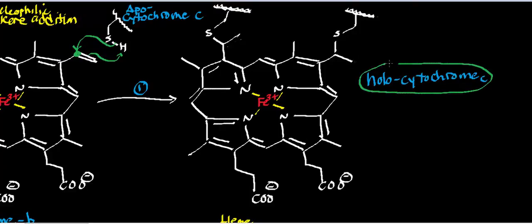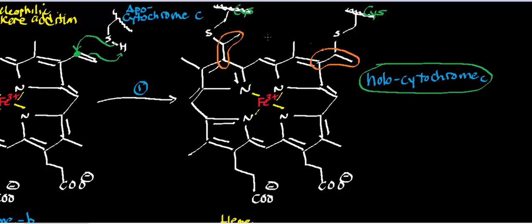The product of this mechanistic step is what's referred to as hollow cytochrome C. What hollow cytochrome C is, is that the conserved cysteine residues are now covalently attached to what were the vinyl groups of heme B. Whenever you have this arrangement where the thiols are now attached at these positions, you call it heme C — the C designates cytochrome C.